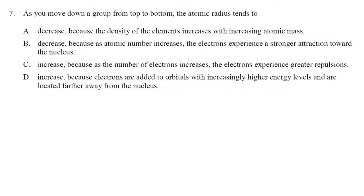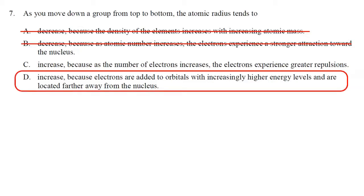Number seven: as you move down a group from top to bottom, the atomic radius tends to increase — so the answer is either C or D. Choice C says that as the number of electrons increases, electrons experience greater repulsion. That's not the right reason, because size actually gets smaller going left to right across a period even as elements gain more electrons. The correct answer is D: it's because electrons are located in increasingly higher energy levels, so the outer shell electrons are located farther and farther away from the nucleus.